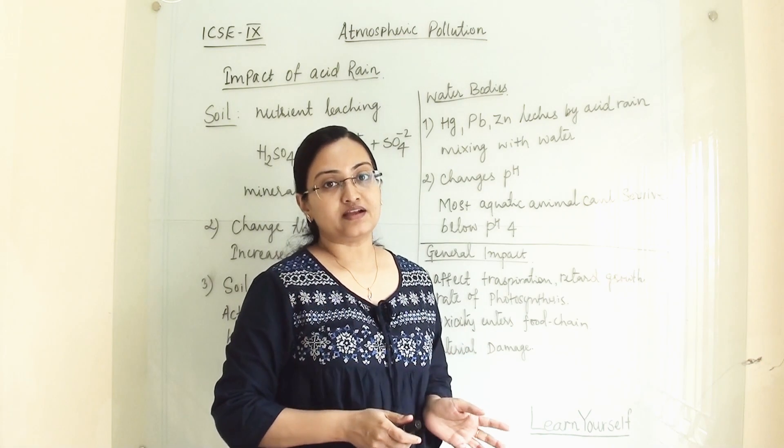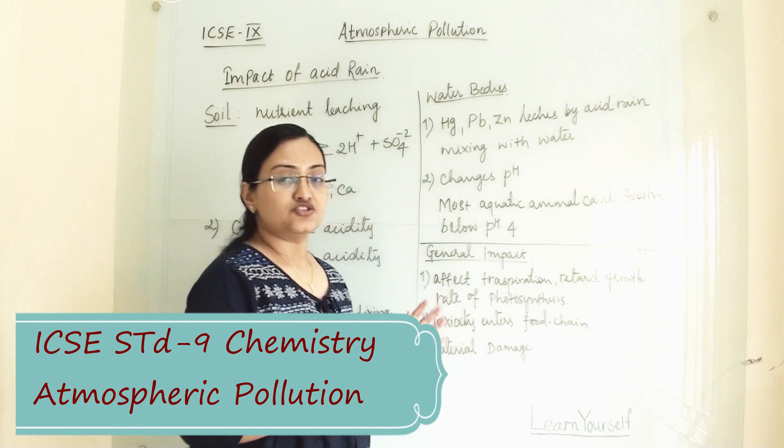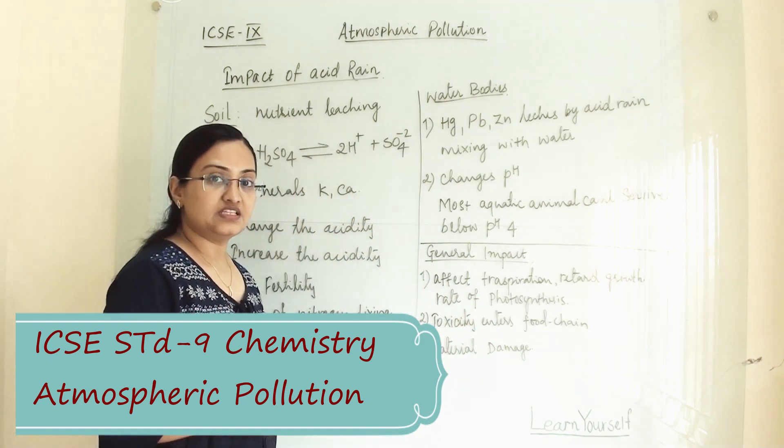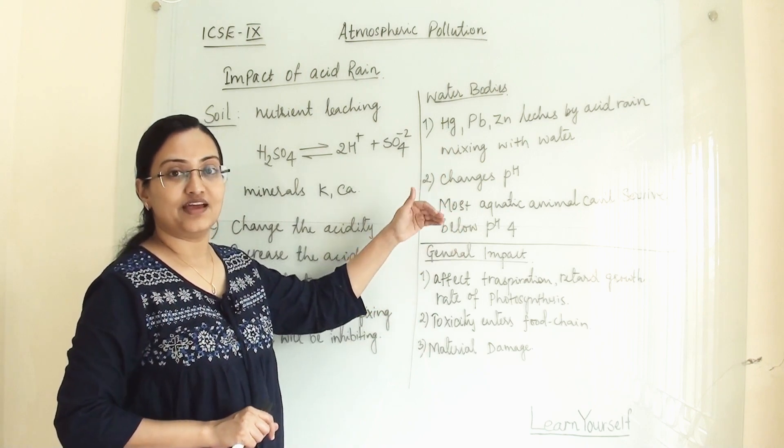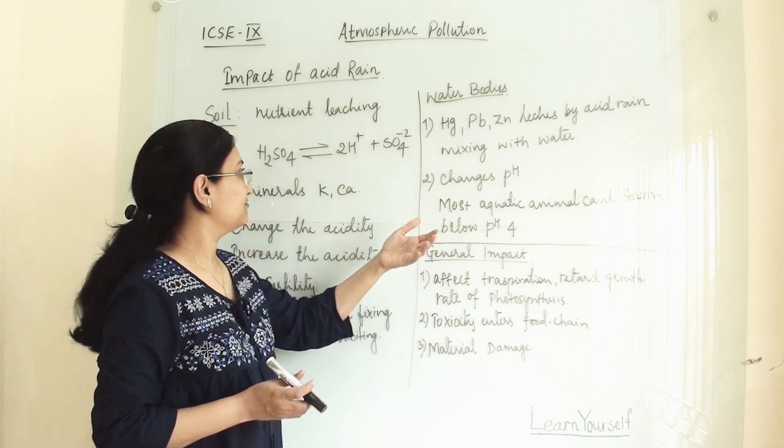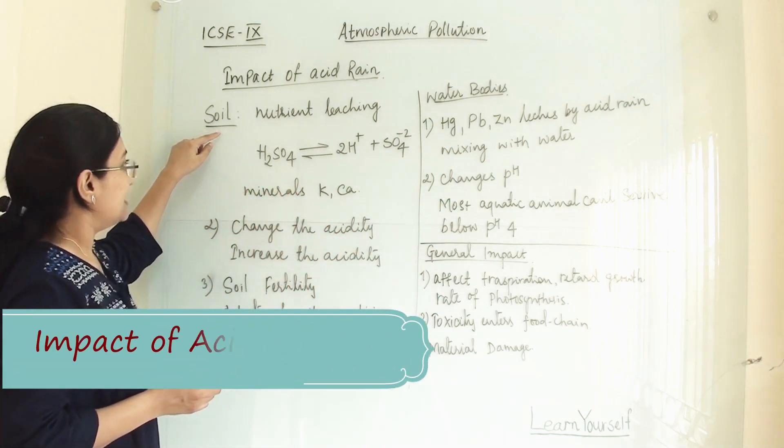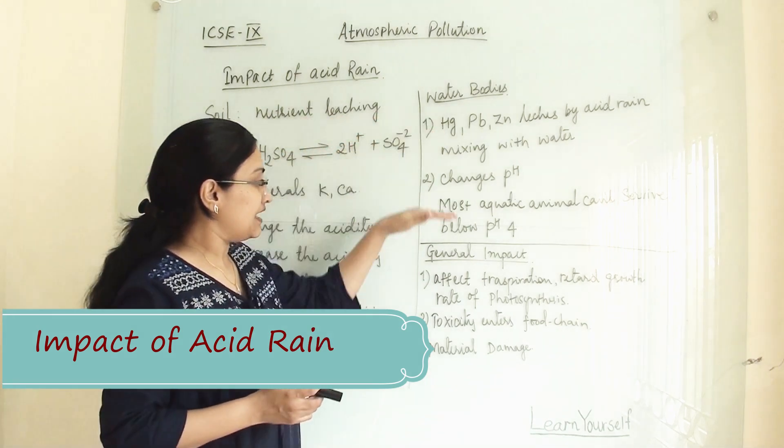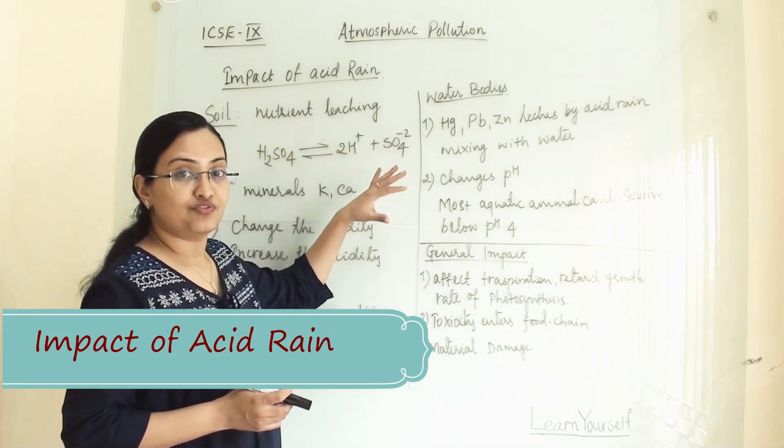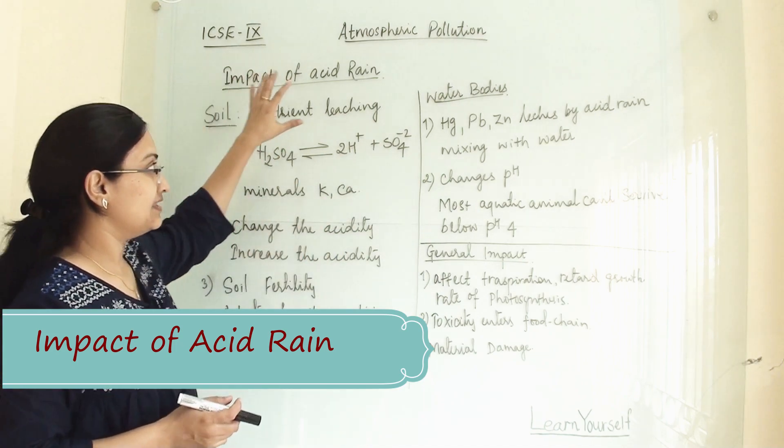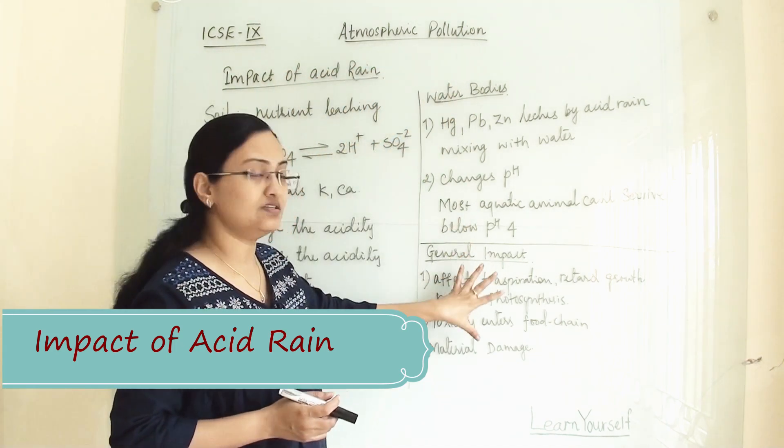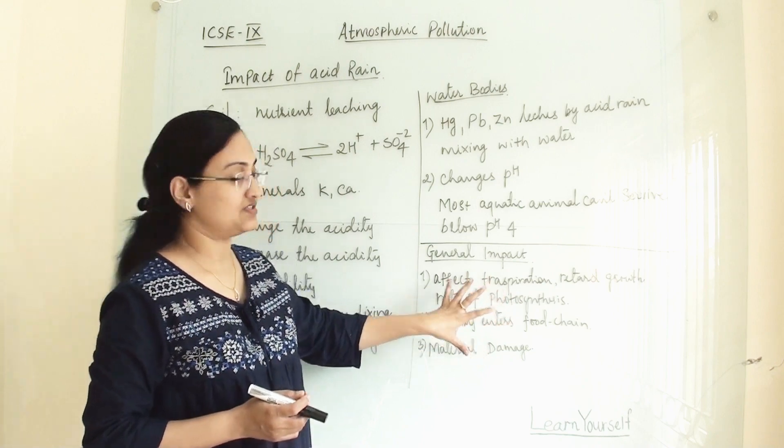Now we will see the impact of acid rain. This topic is really very easy. Only thing you have to remember is this point and then you can elaborate by yourself. There are three main categories in which we have divided the impact of acid rain: first is soil, then water bodies, and some general impact of acid rain.